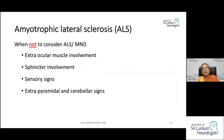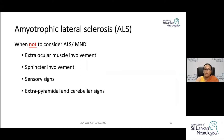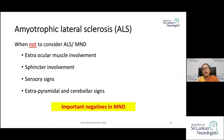There are important negatives to consider when evaluating suspected ALS. You do not get extraocular muscle involvement, there is no sphincter involvement, there are no hard sensory signs — since this is a disorder of motor neurons — and you usually do not get extrapyramidal or cerebellar signs.